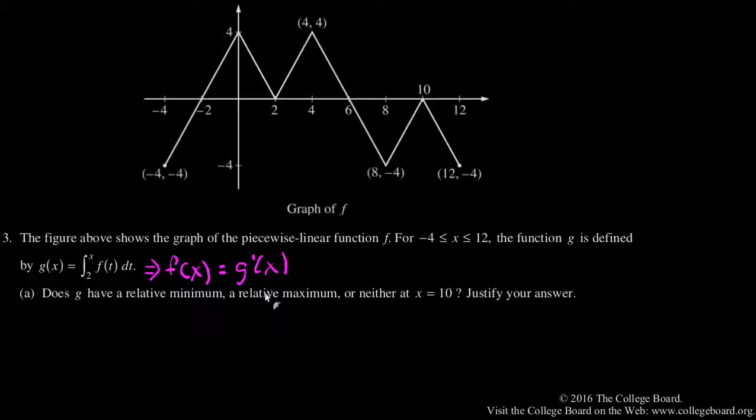Looking at x equals 10, we can see f of x is negative here. F of x is still negative here, which means g prime is negative on both sides. Since we don't change signs, we know it's neither.